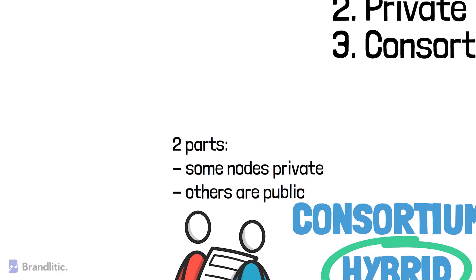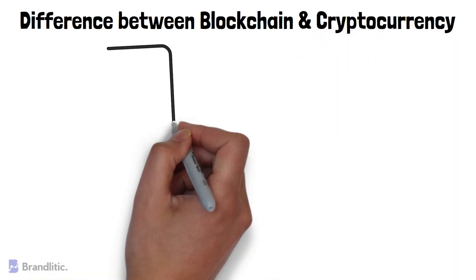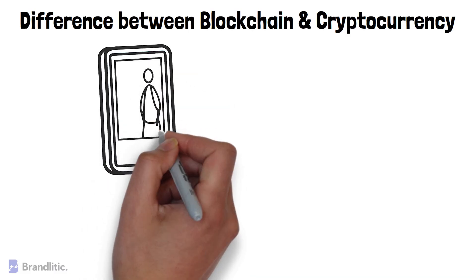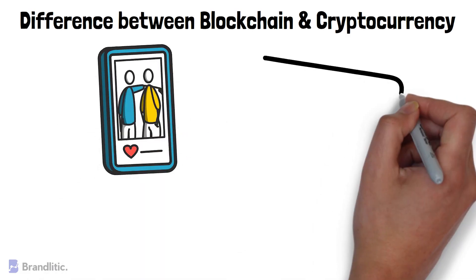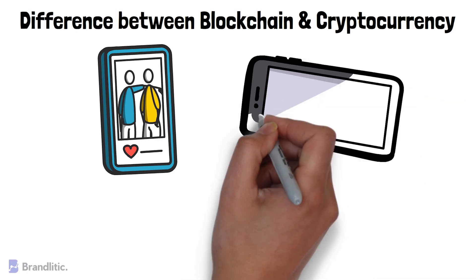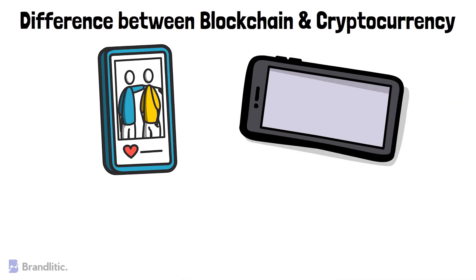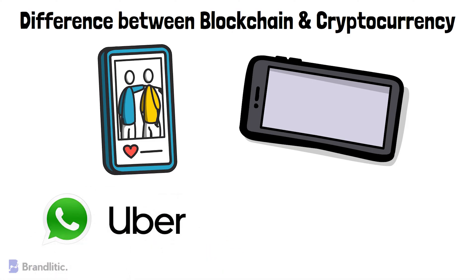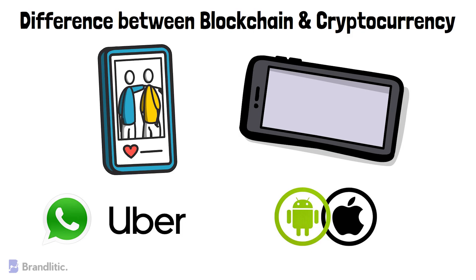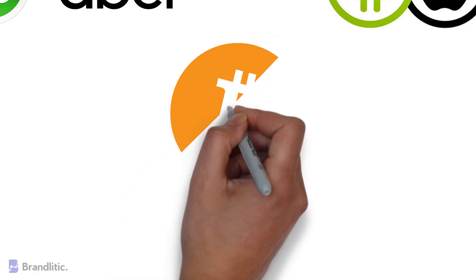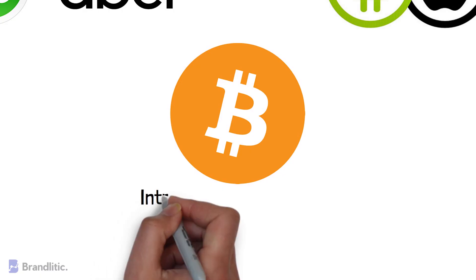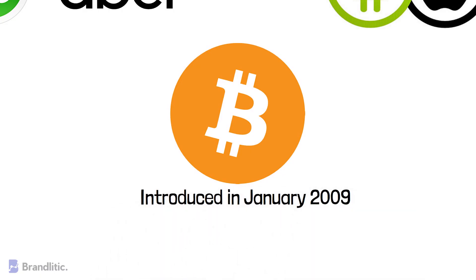Now let's answer the biggest confusion — what is the difference between blockchain and cryptocurrency? The difference between cryptocurrency and blockchain is the same difference between a mobile application and your mobile platform. For example, the app can be WhatsApp or Uber, while the platform can be iOS or Android. The applications will run on the platform, and in a similar tone, blockchain is the platform while cryptocurrency is the application. This confusion is quite common as both cryptocurrency and blockchain were introduced at the same time with Bitcoin, and Bitcoin was the first application of cryptocurrency on the blockchain platform.